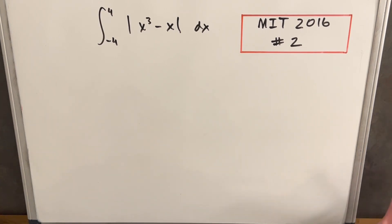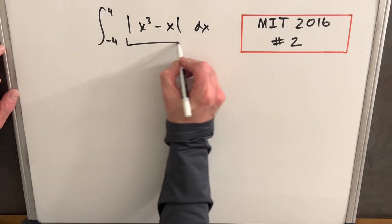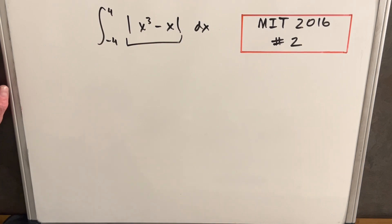Okay, so it looks pretty simple, but there's a few interesting parts, and the absolute value is going to be something we need to work around. So the first thing I want to do is just notice our whole expression here is going to be an even function.